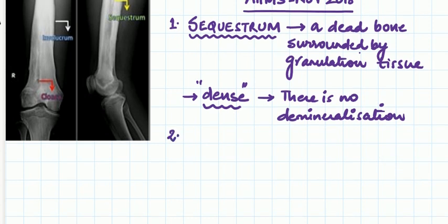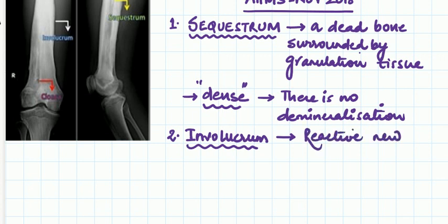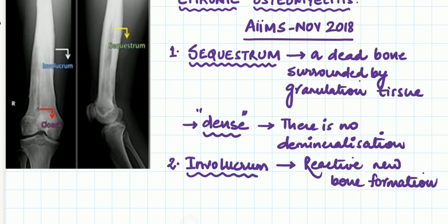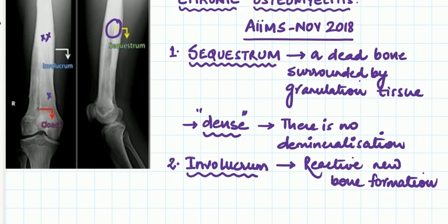The second important structure in chronic osteomyelitis is the involucrum. Involucrum is basically a reactive new bone formation. New bone formation will appear white on X-ray. Looking at this image, all the white dense structure you see here is the involucrum. This is the AP view and this is the lateral view — don't get confused. In the AP view, you can see increased density suggesting a high periosteal reaction, and the bone is also expanded, indicating new bone formation.